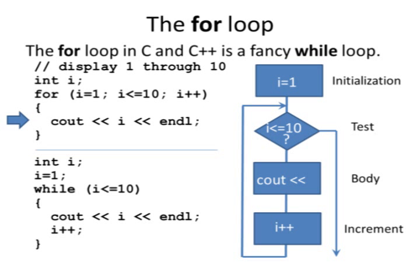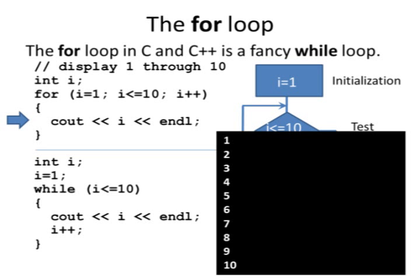This example shows a block of code attached to the FOR statement. All it does is says COUT, i, and then ENDL. So it's going to print 10 lines: 1, 2, 3, 4, 5, 6, 7, 8, 9, 10.